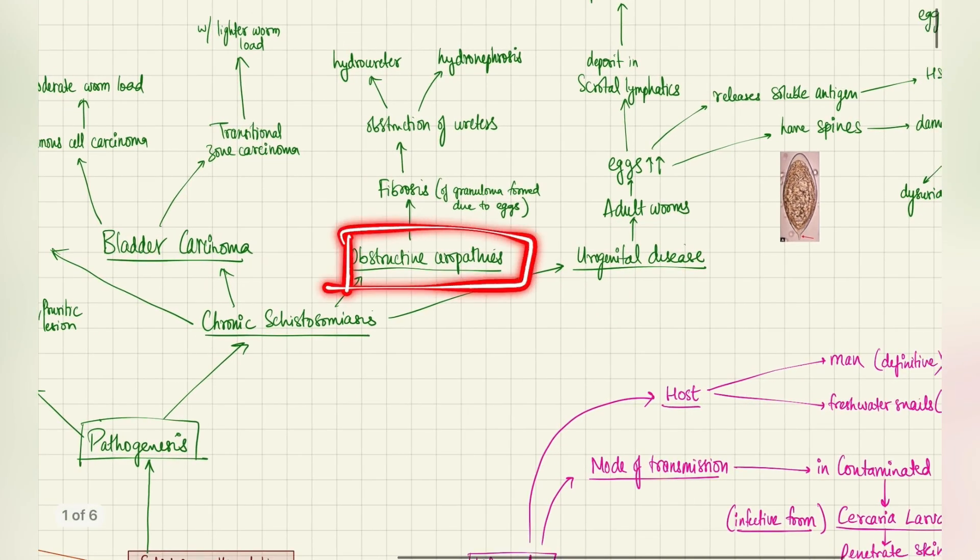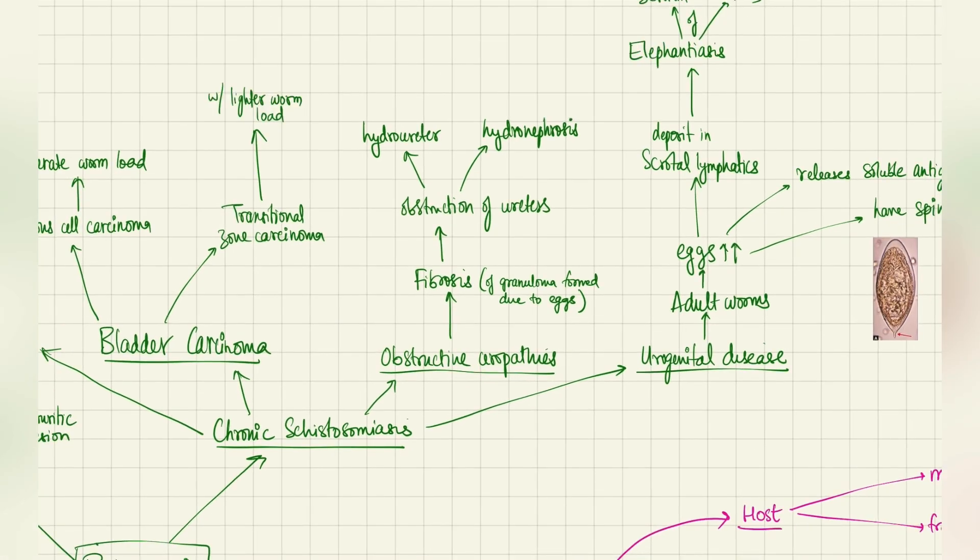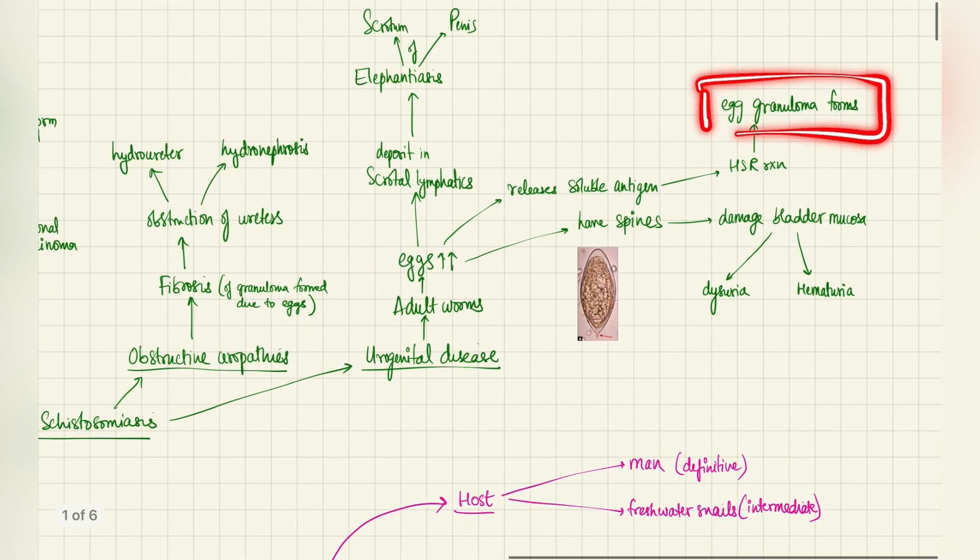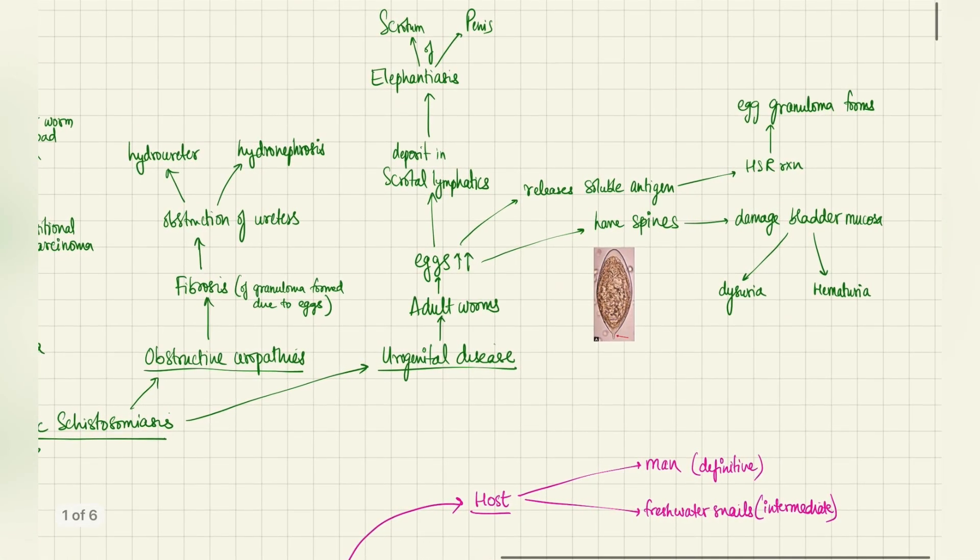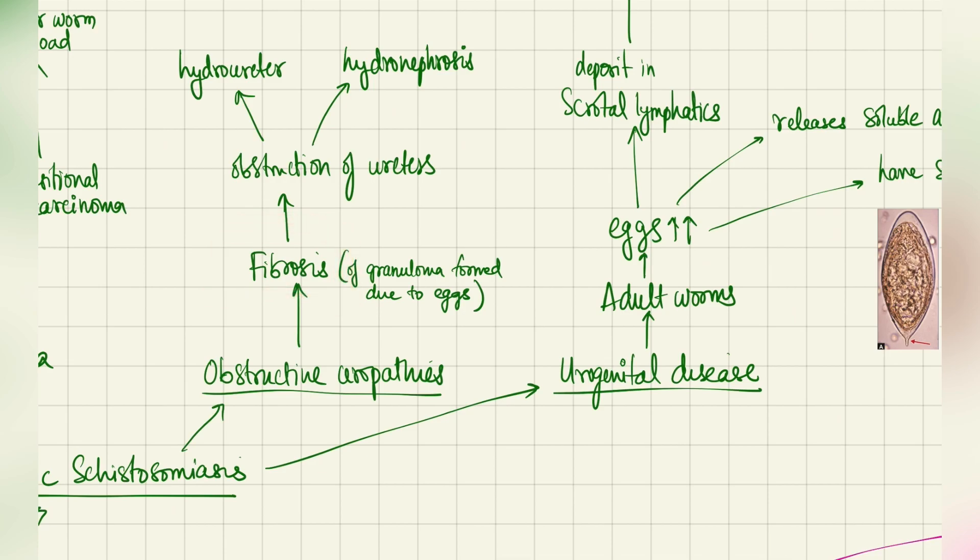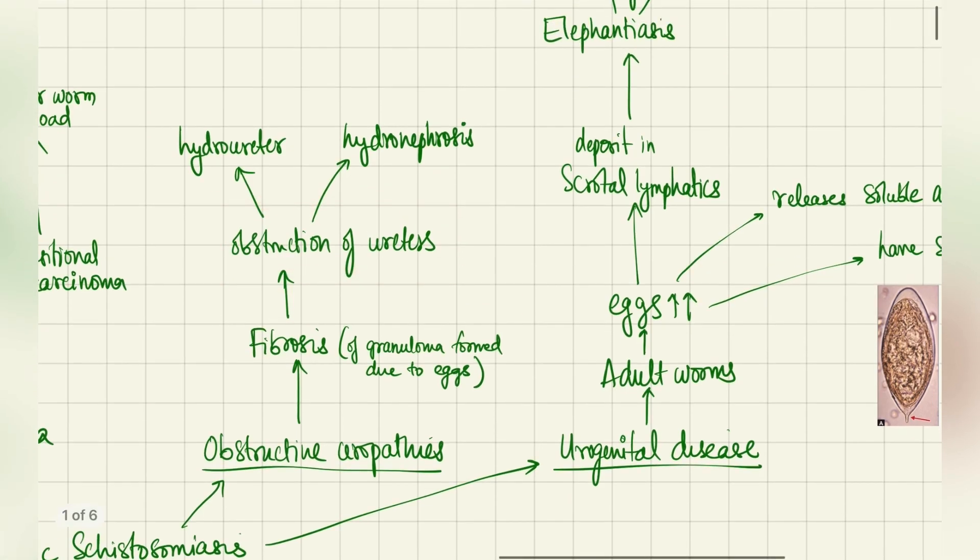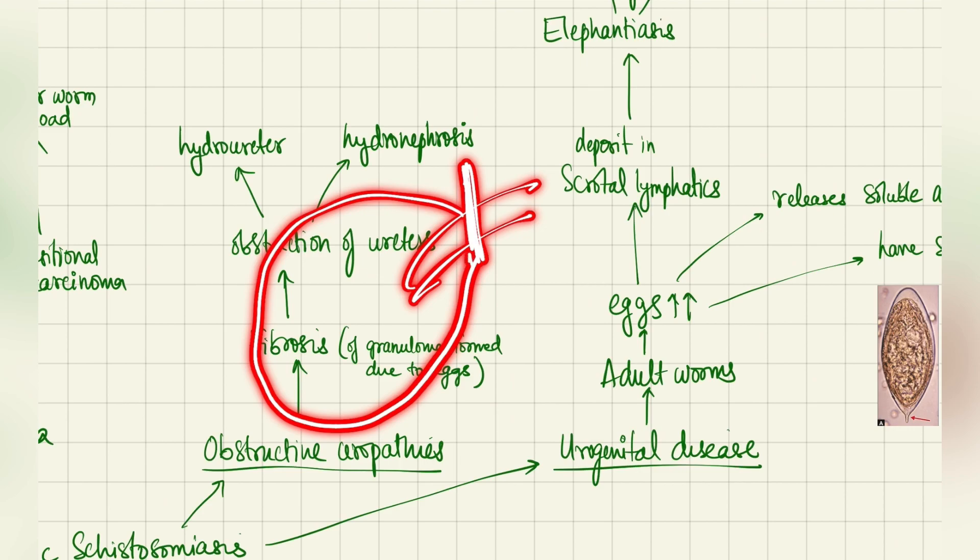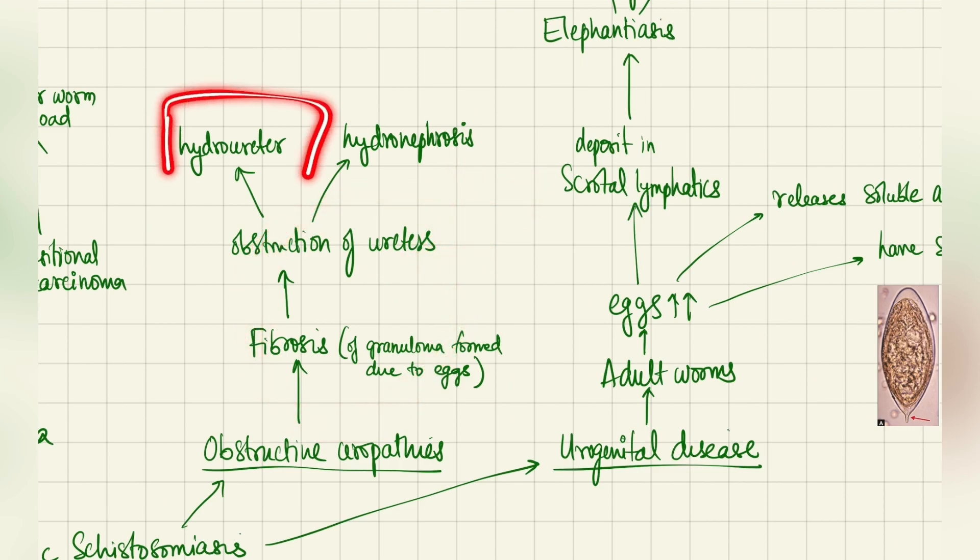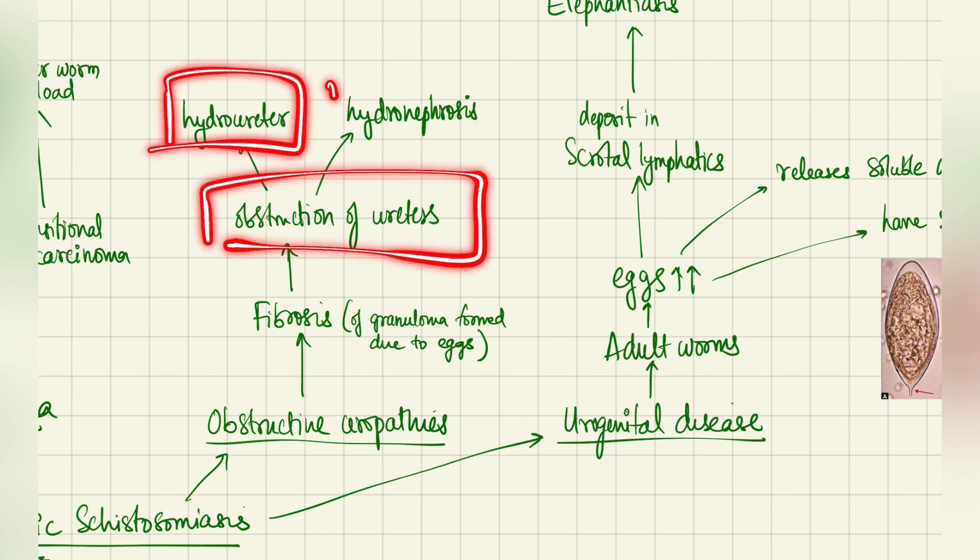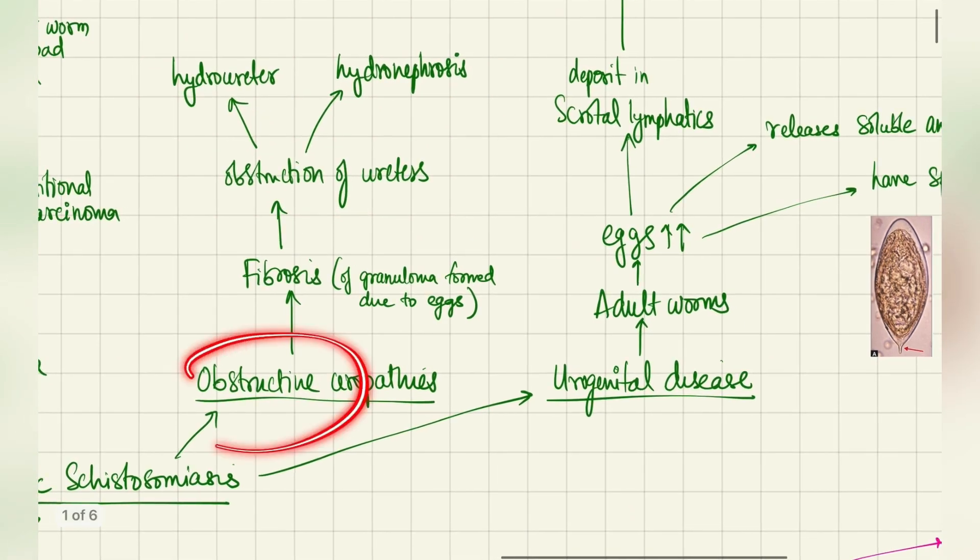Coming to the obstructive uropathies, as the name suggests, there will be obstruction. First of all, how does that come to be? The granuloma which was earlier formed due to the egg—granuloma is a type of injury, right? Where injury comes to be, there is supposed to be healing. Healing will be in the form of fibrosis initially. So this fibrosis, the granuloma turns into fibrosis. That fibrosis will actually cause the obstruction of ureters. This obstruction can then, if you obstruct it, because of the increase in the structures behind it, there can be hydroureter, there will be an increase in the size of ureter, and hydronephrosis. This is because of the obstruction of ureters.